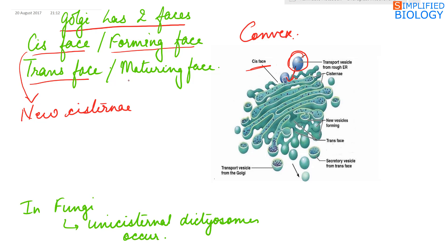Trans phase is the maturing phase where older cisternae are broken down to form tubules and vesicles. The concave side of the Golgi complex is the trans phase where the cisternae breaks up to form tubules, vesicles and vacuoles.